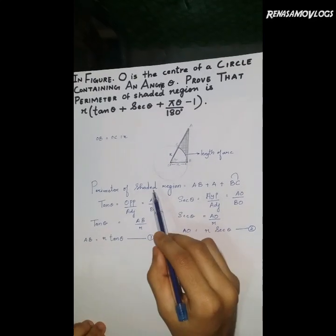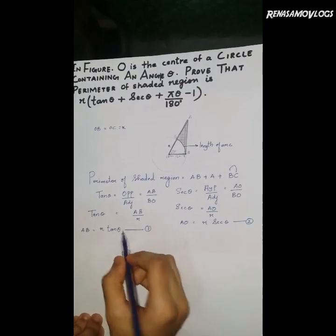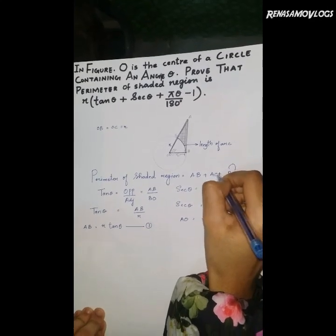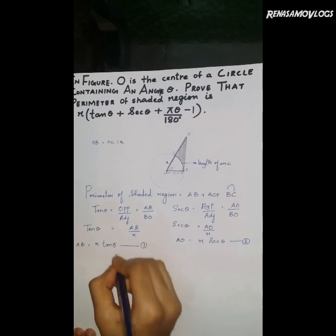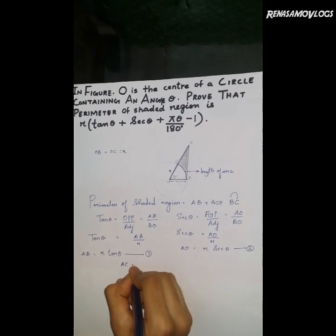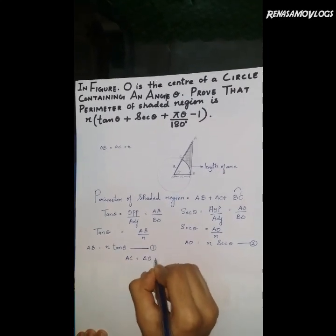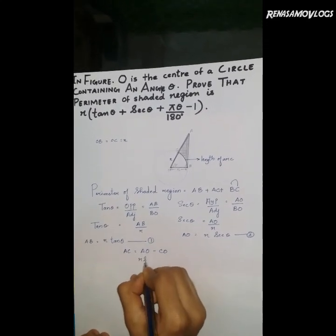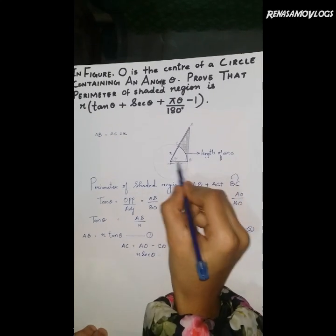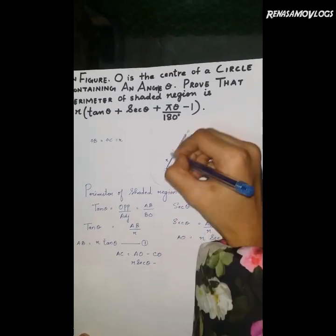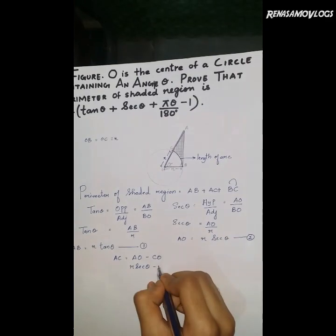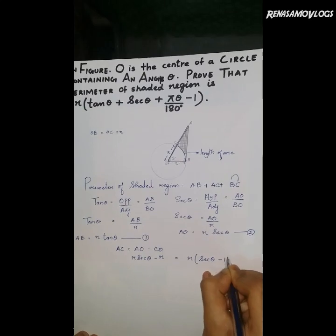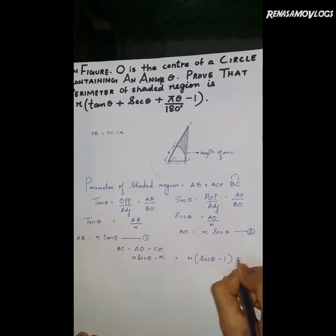To find the perimeter of the shaded region, we have AB but not AC. So AC equals AO minus CO. AO is R sec theta, and CO is also R, the radius. Here R is common, so AC equals R times sec theta minus 1. That is step 3.